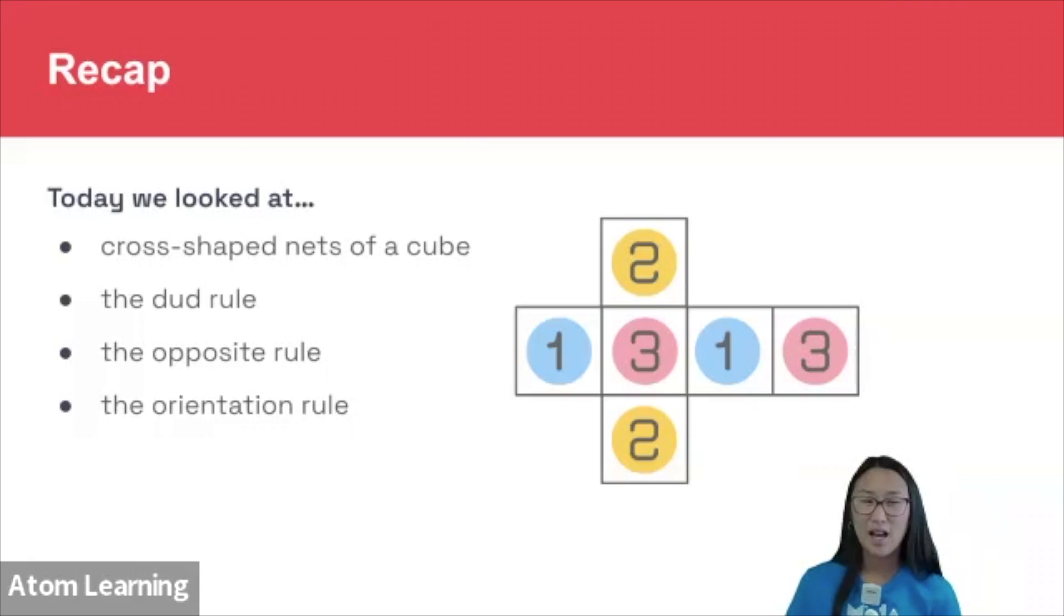Today, we looked at cross-shaped nets of a cube. So anything that was sort of T-shaped. And then we looked at these three rules. We looked at the opposite rule, which is represented by this image here. We also looked at the dud rule. So when faces on the cube do not appear in net. And we also looked at the orientation rule. So thinking about the way triangles, arrows, lines are facing. Those are our three rules to look out for with nets of a cube.